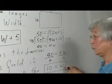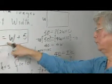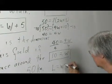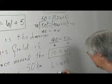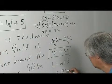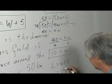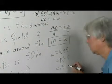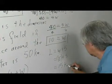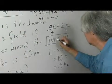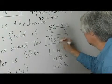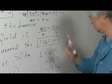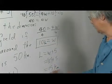Having solved for W, now I can solve for L. L equals W plus 5 equals 10 plus 5. And now I'm going to add back the units. The width is 10 kilometers and the length is 15 kilometers.